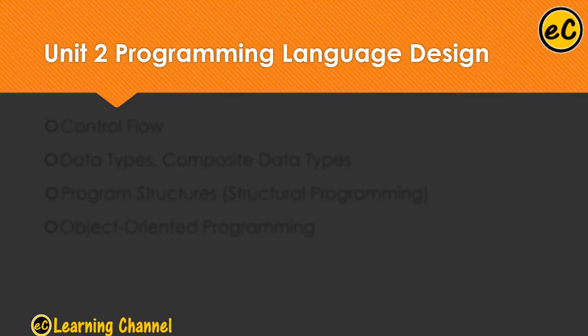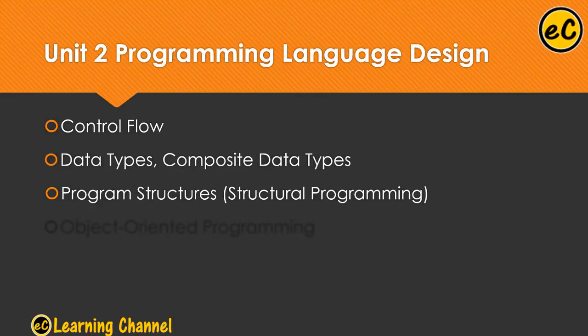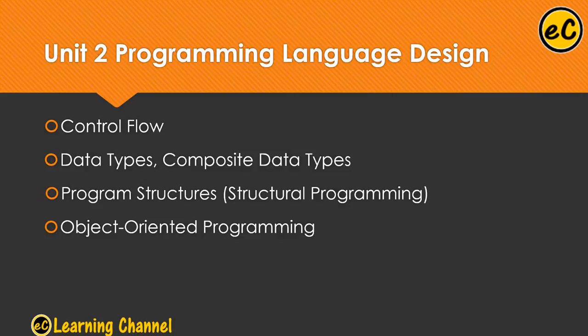Unit 2 will show you programming language design issues, including control flow, data types, and composite data types. Composite data types include arrays, records, unions, enums, and other data structures such as lists. We will also teach you program structures for structural programming, and at the end of Unit 2, we will cover object-oriented programming.